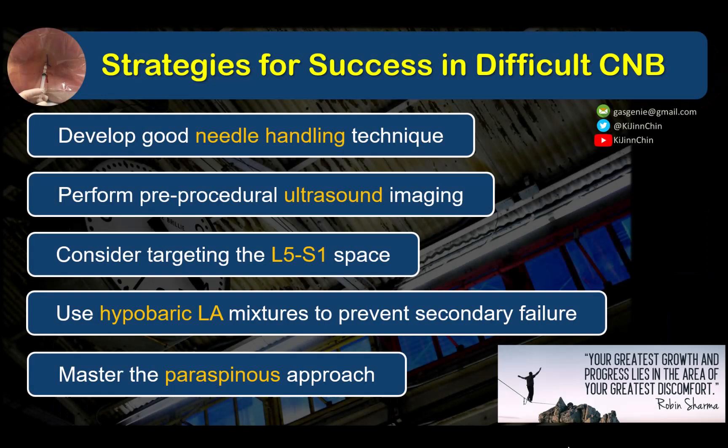So in summary, these are the strategies for success in difficult central neuraxial blockade: develop good needle handling technique; learn and master pre-procedural ultrasound imaging; when spaces are narrowed, look for and consider targeting the L5-S1 space, but use a hyperbaric local anesthetic mixture to ensure sufficient block height and surgical anesthetic success; and finally, master the paraspinous approach, as that is often the most feasible one in truly difficult and challenging spines.